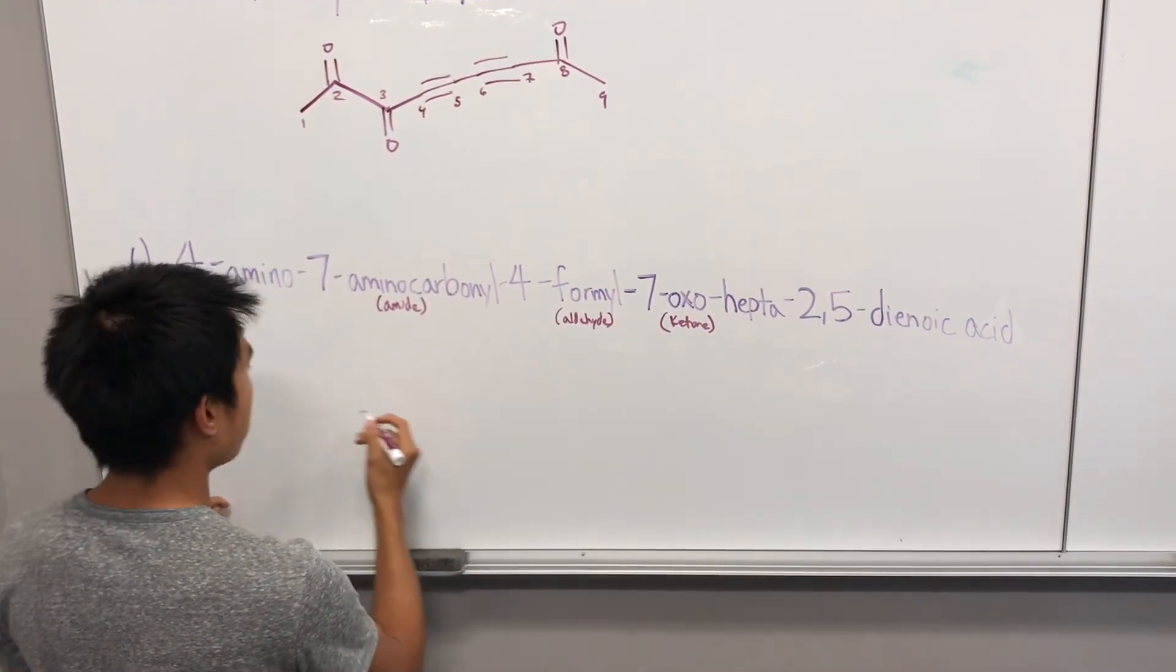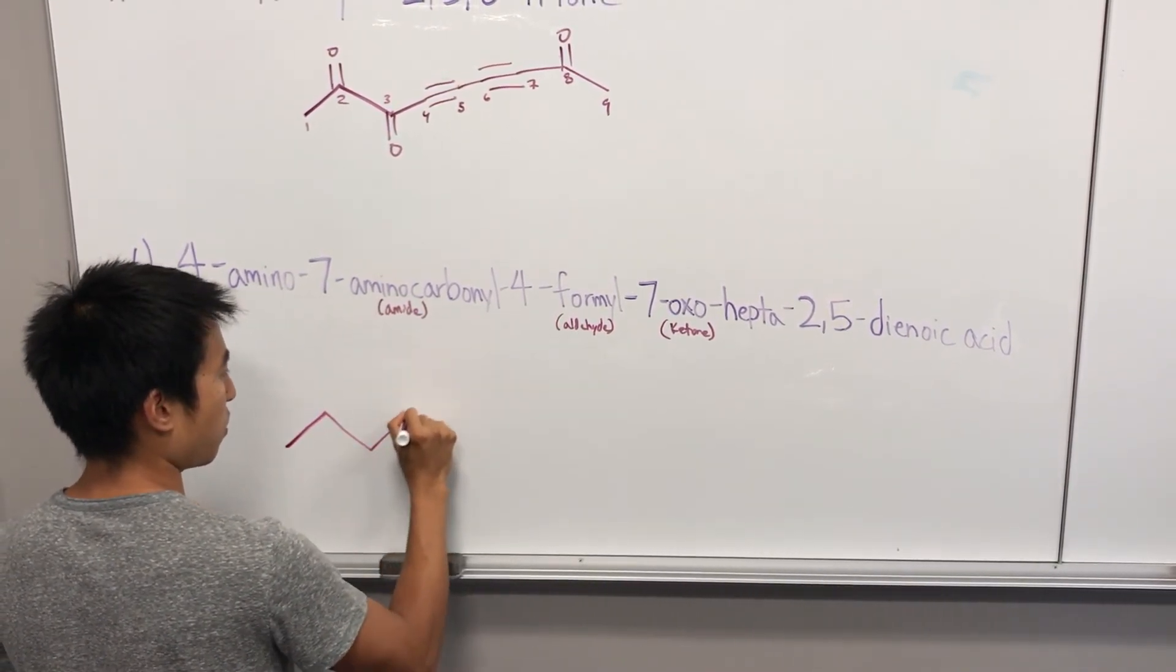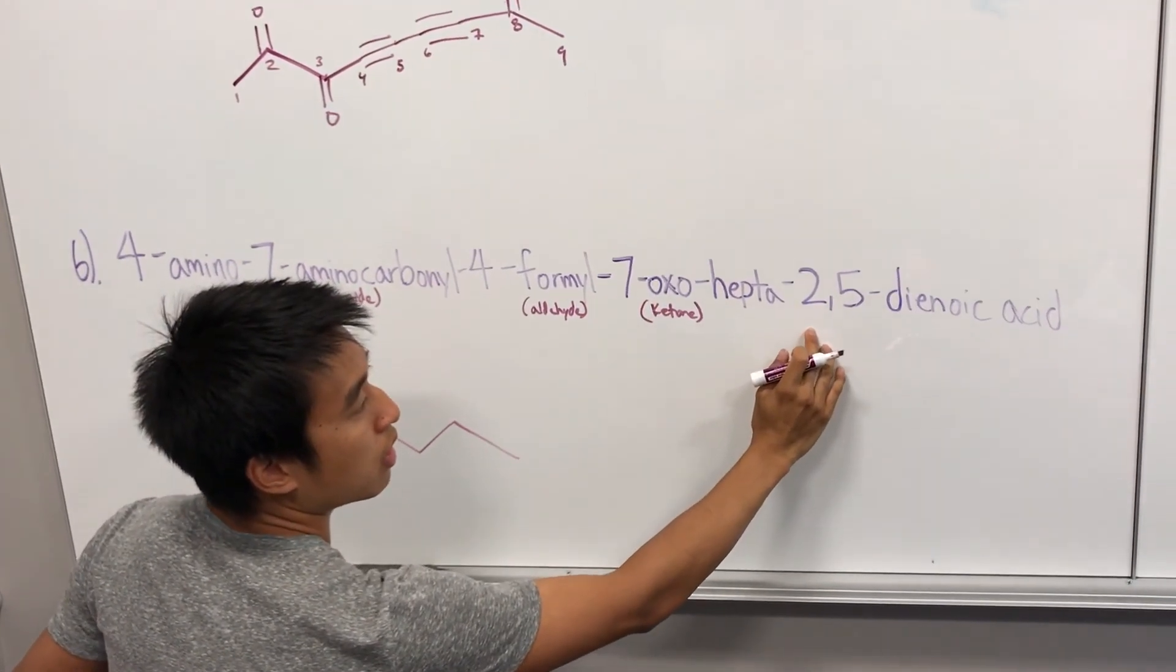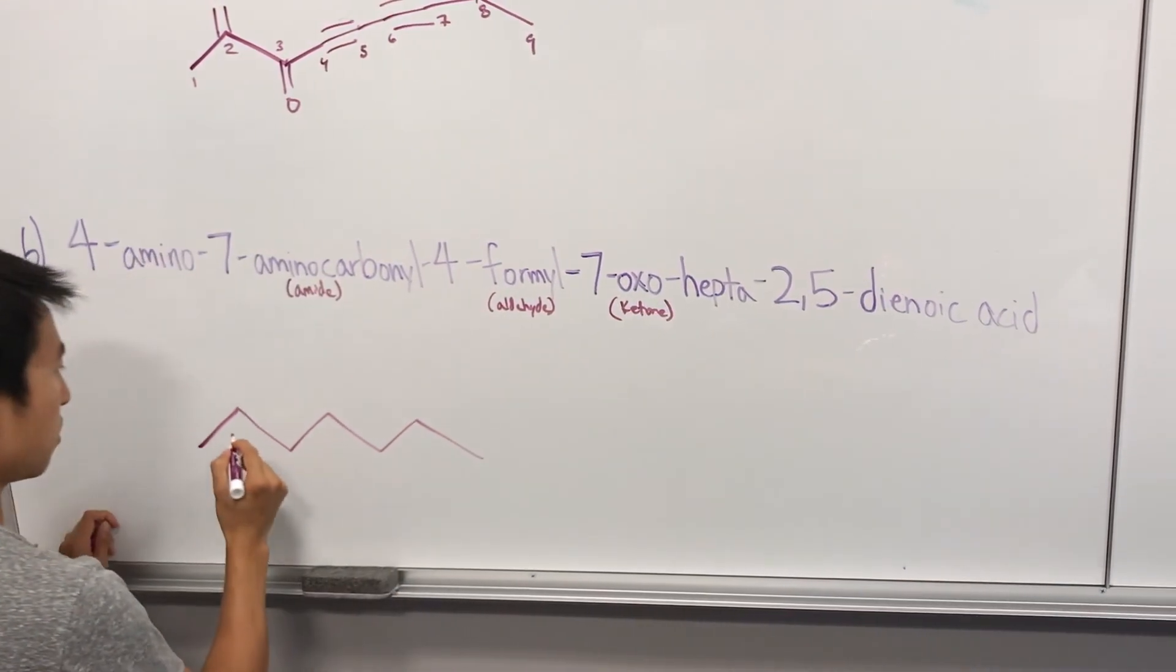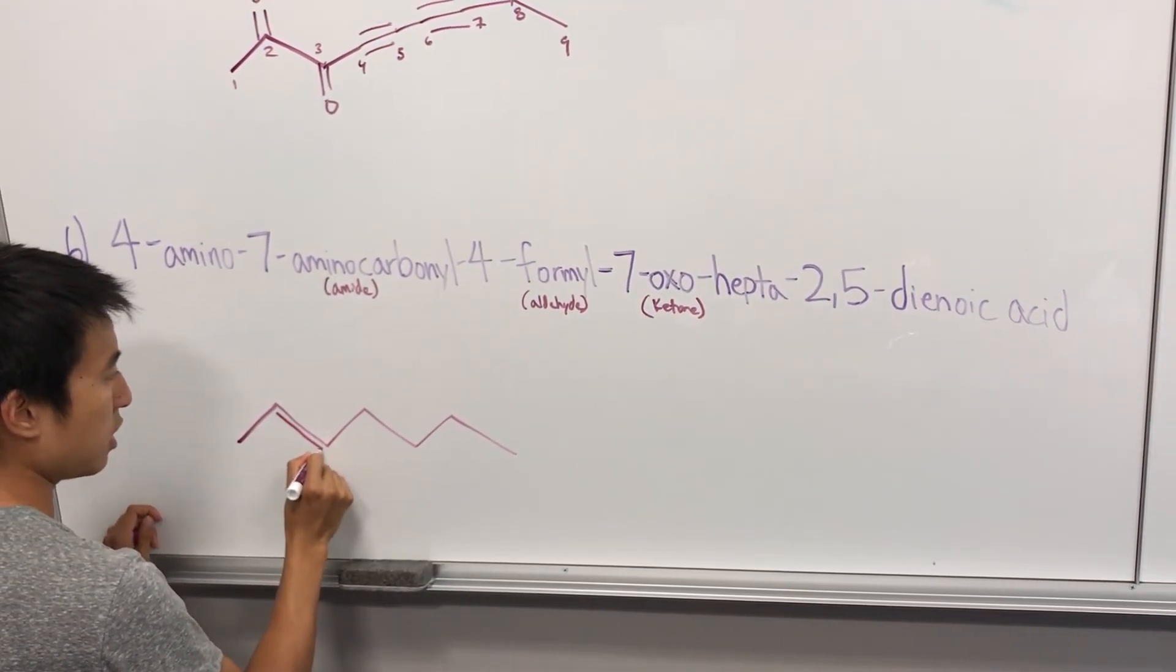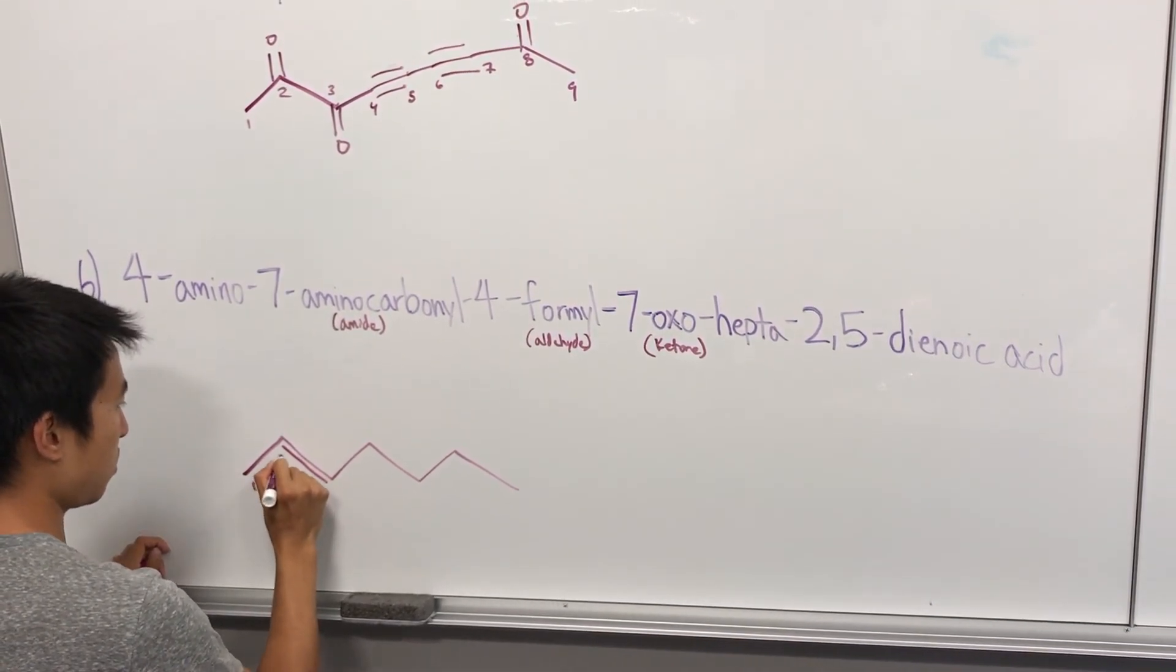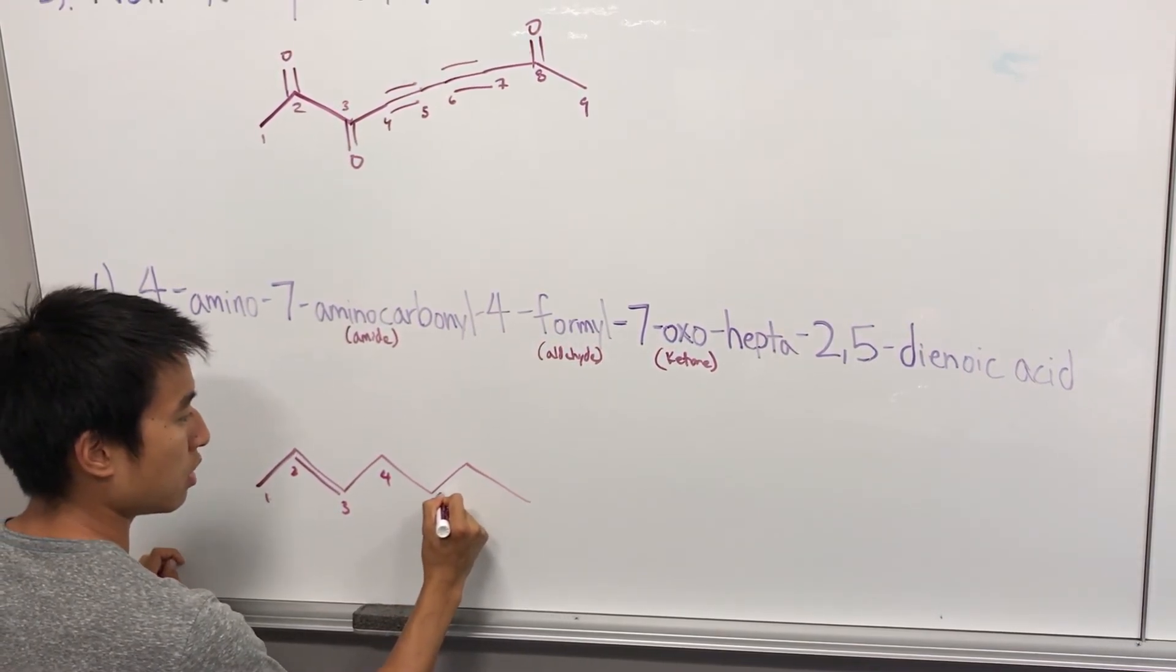One, two, three, four, five, six, seven. And then two and five, we have dienes. So at two we have an alkene starting at two. One, two, three, four, five. Ene, so alkene.